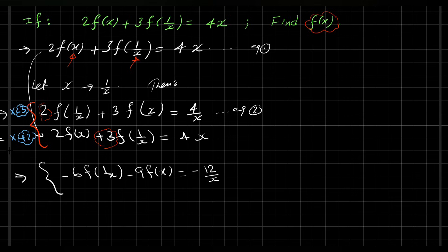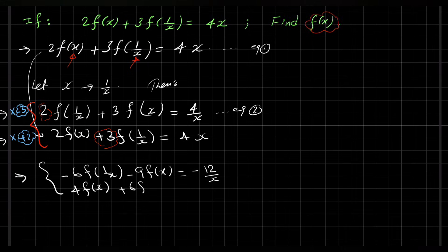And for this equation, if we multiply by 2 we have 4f(x) + 6f(1/x) = 2 times 4, this is 8x.